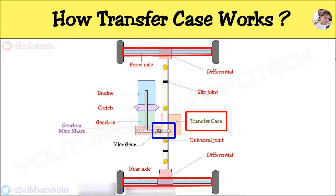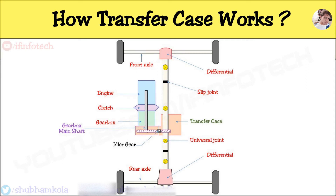The driver can put the transfer case into either two wheel drive mode or four wheel drive mode. This is sometimes accomplished by means of a shifter mechanism. On some vehicles, this may be accomplished by an electronically operated switch.